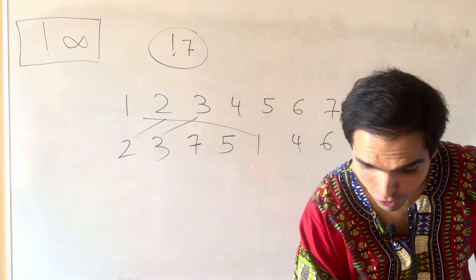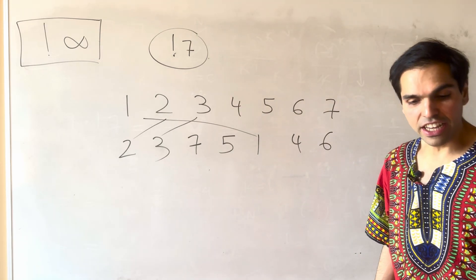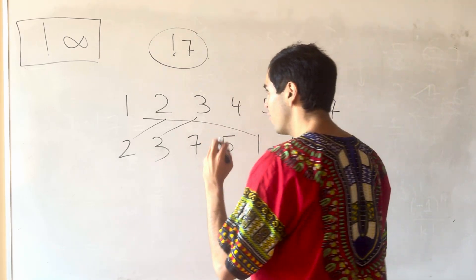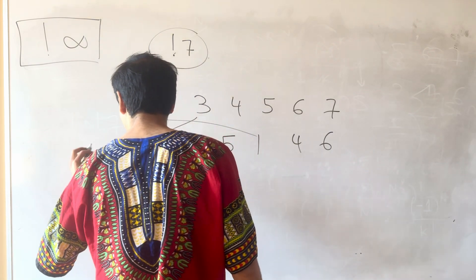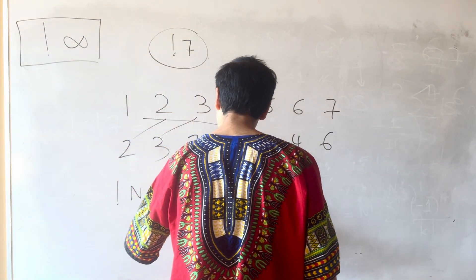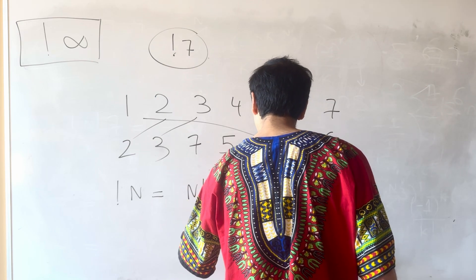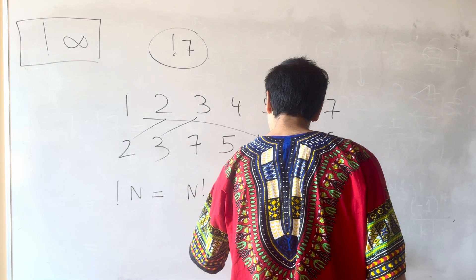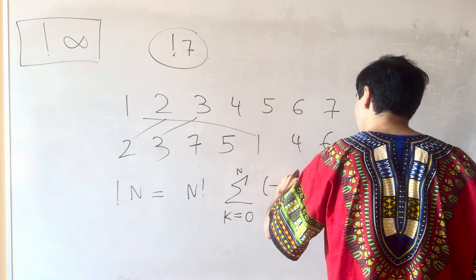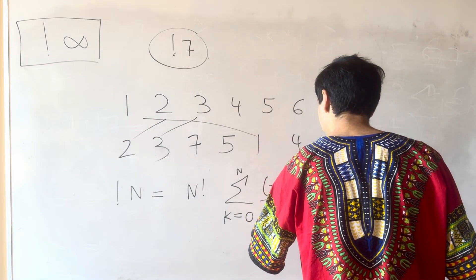And moreover, what we found in previous videos, there's a very nice formula for bang n. Mainly, bang n is just n factorial times the sum from k equals 0 to n of minus 1 to the k over k factorial.